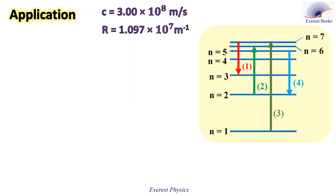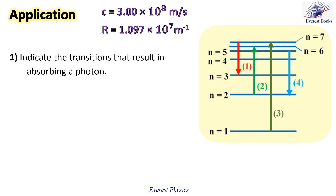Now let's solve an application. The adjacent figure shows four electronic transitions — 1, 2, 3, and 4 — of the hydrogen atom. Part one: indicate the transitions that result in absorbing a photon. When an atom absorbs a photon, it makes an upward transition. Looking at the figure, transition 2 corresponds to a transition from N = 2 to N = 6, and transition 3 corresponds to a transition from N = 1 to N = 7. So transitions 2 and 3 result in absorbing a photon.